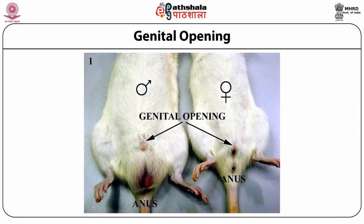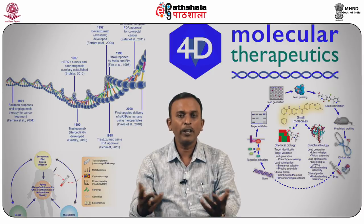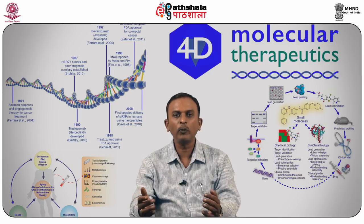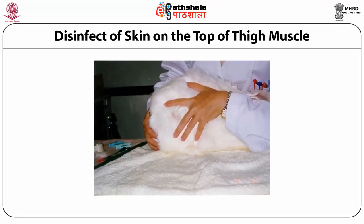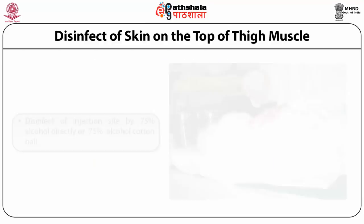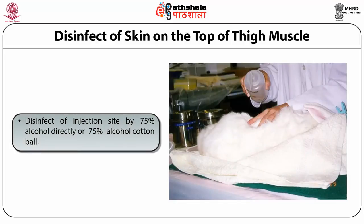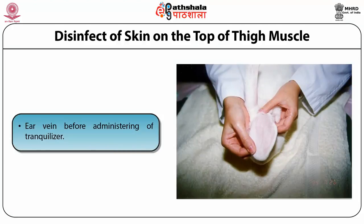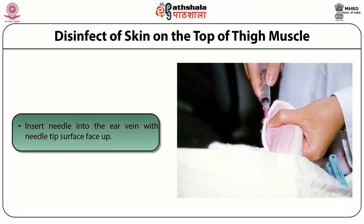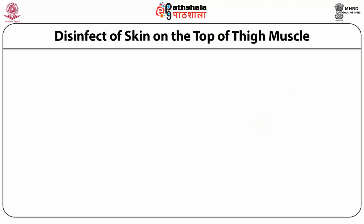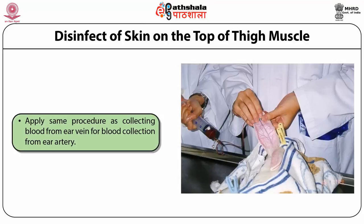The same anogenital distance criterion for sex identification applies to rats: larger distance in males, shorter in females. In rabbits, intramuscular injection is used to administer antibiotics, tranquilizers, or anesthetic agents. The skin over the thigh muscle is disinfected with 75% alcohol. Ear vein injection and blood collection are also performed in rabbits, using either a standard needle or a butterfly needle inserted directly into the ear vein.